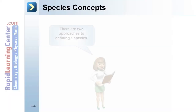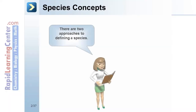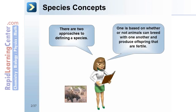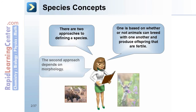There are two approaches to defining a species. One is based on whether or not animals can breed with one another and produce offspring that are fertile. The second approach depends on morphological and physical similarities.